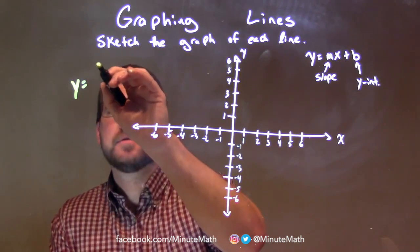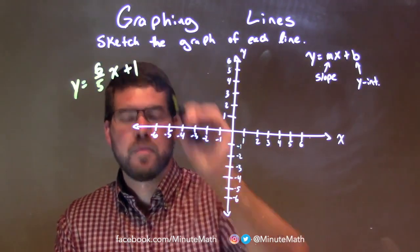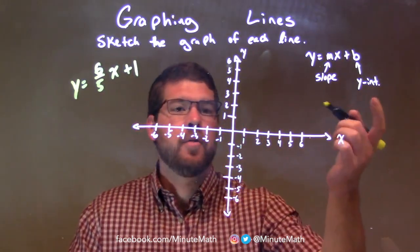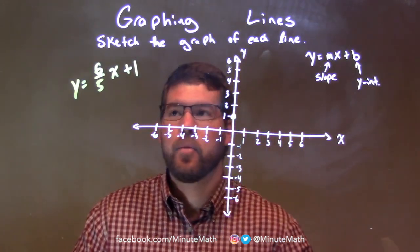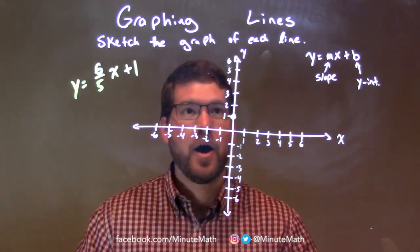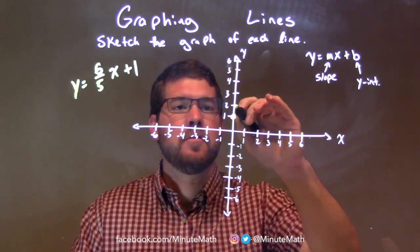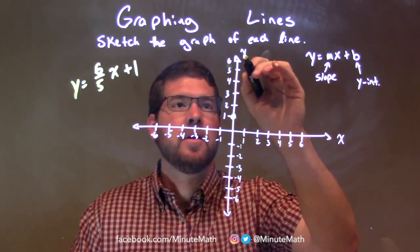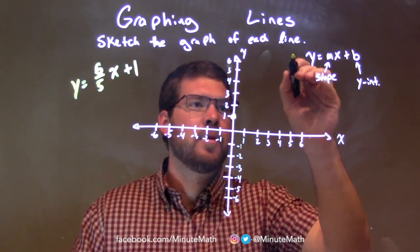y equals 6 fifths x plus 1. Well, 1 is the y-intercept. So we've got a point right there. Now we have 6 fifths, so we go up 6 units over 5. That's going to get a little bit out of our graph. So we've got up 6 units: 1, 2, 3, 4, 5 — one more for 6 — over 5: 1, 2, 3, 4, 5. There's a point somewhere here.